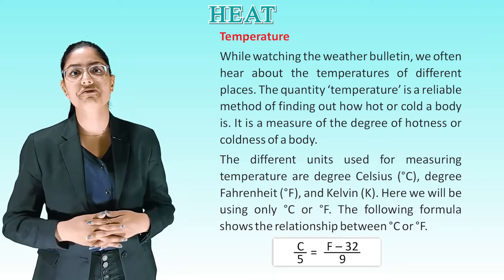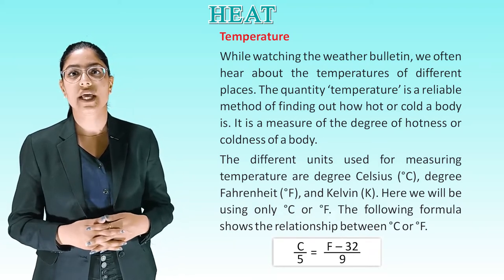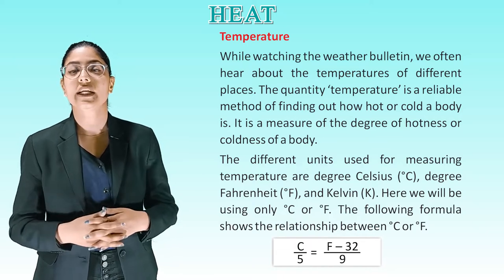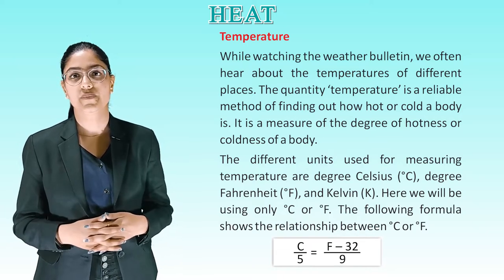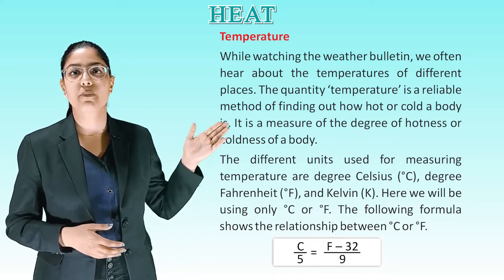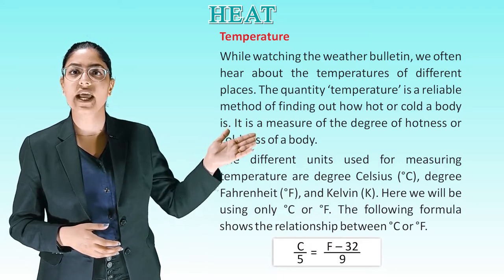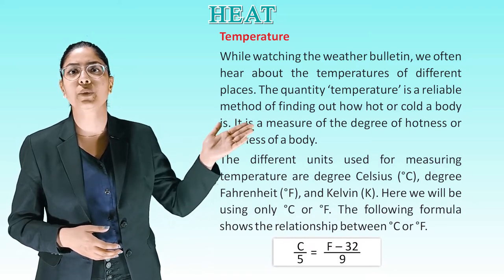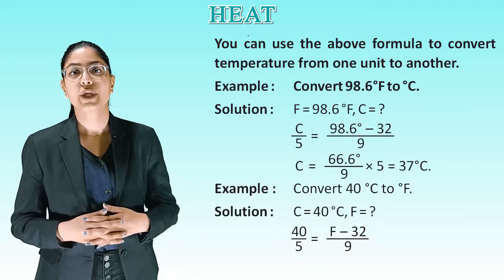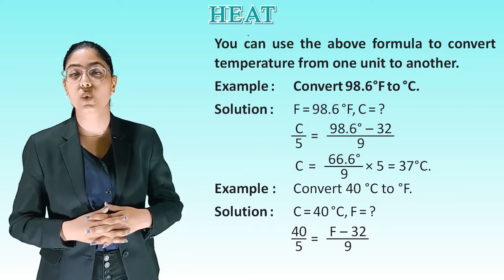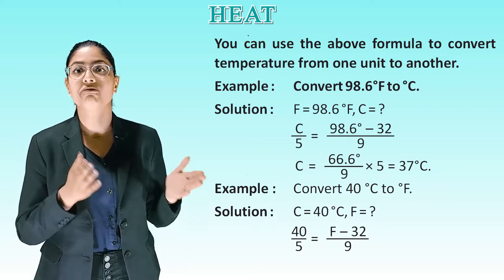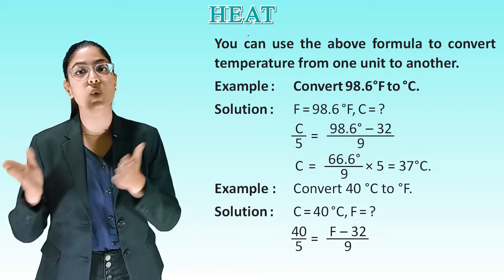The following formula shows the relation between degree Celsius and degree Fahrenheit: C/5 = (F − 32)/9. You can use this formula to convert temperature from one unit to another.